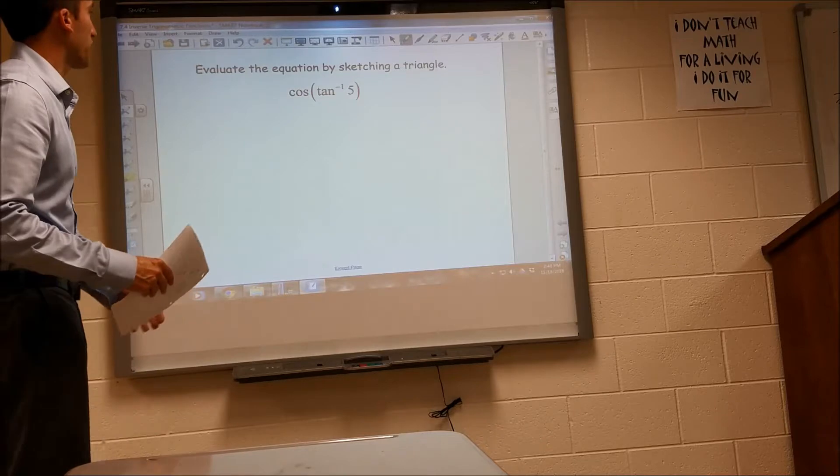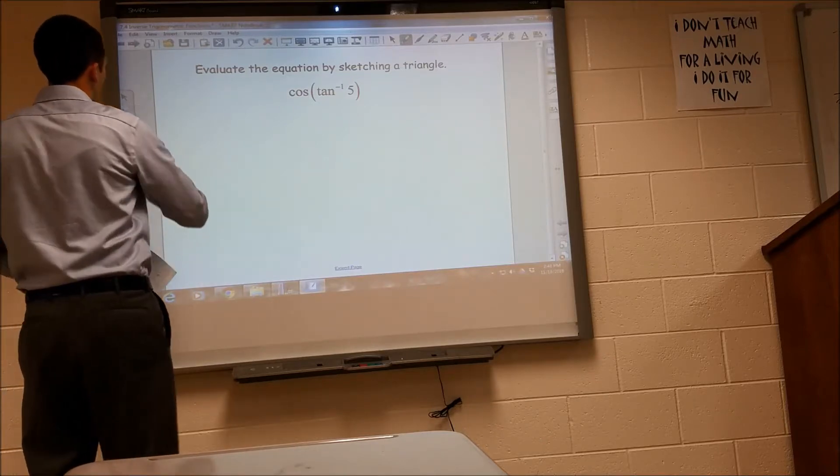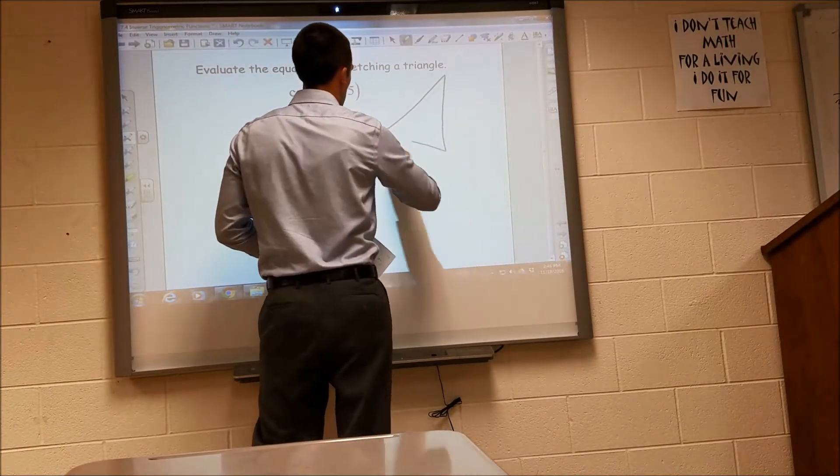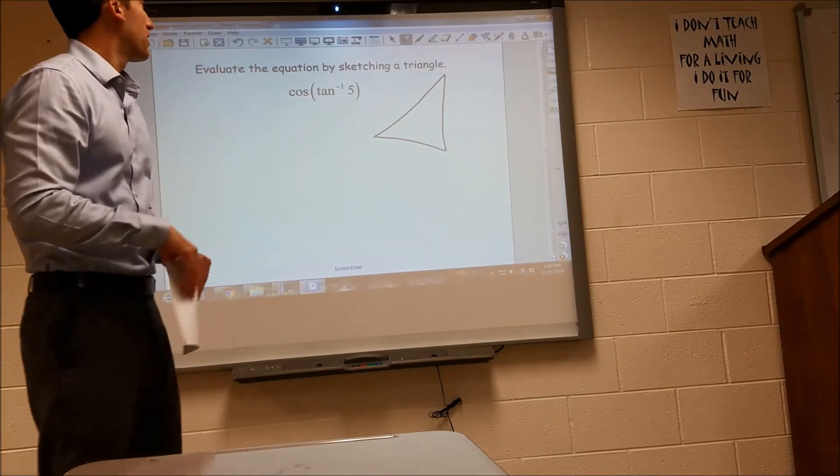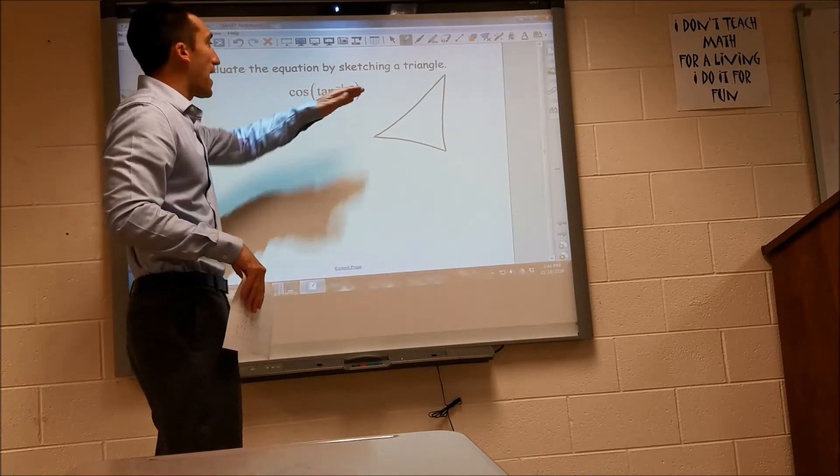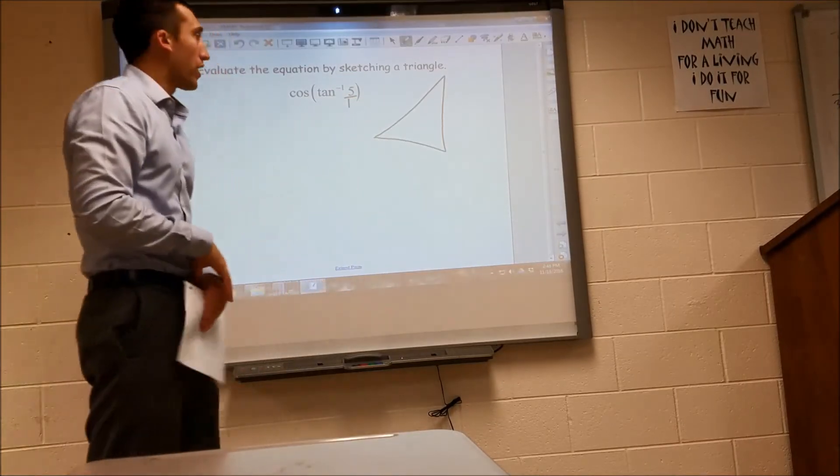One more, just like this. I'm going to go ahead and sketch the triangle. Tangent is opposite over adjacent. So since tangent is 5, we can assume that that's 5 over 1. So opposite of my angle is 5.